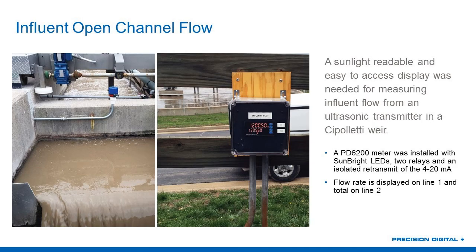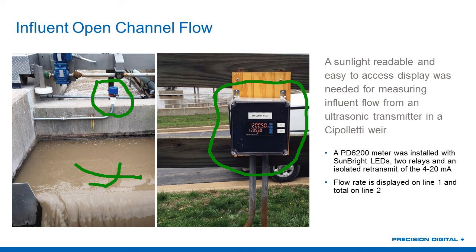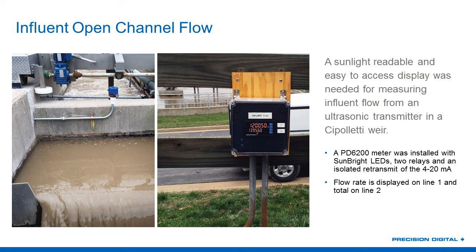We obviously do a lot of open channel flow applications. This is influent flow — we've got an ultrasonic level transmitter installed here over the wastewater, obviously influent. The customer needed some way of powering up that ultrasonic transmitter, which of course we're doing with our PD-6200 over here. Relays for alarm and control. This particular one is one of our sun-bright LED versions, which means they can be seen from about 30 feet away. In this particular case, this is a 48-inch Cipolletti weir, and we can see the influent values — GPM on top and totalized gallons on our sun-bright readable display.